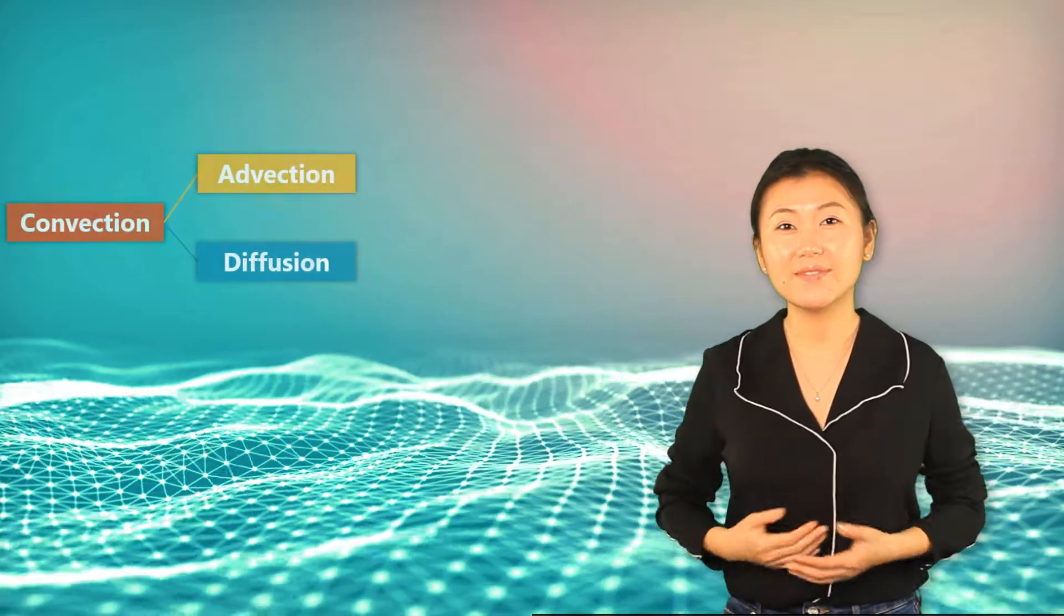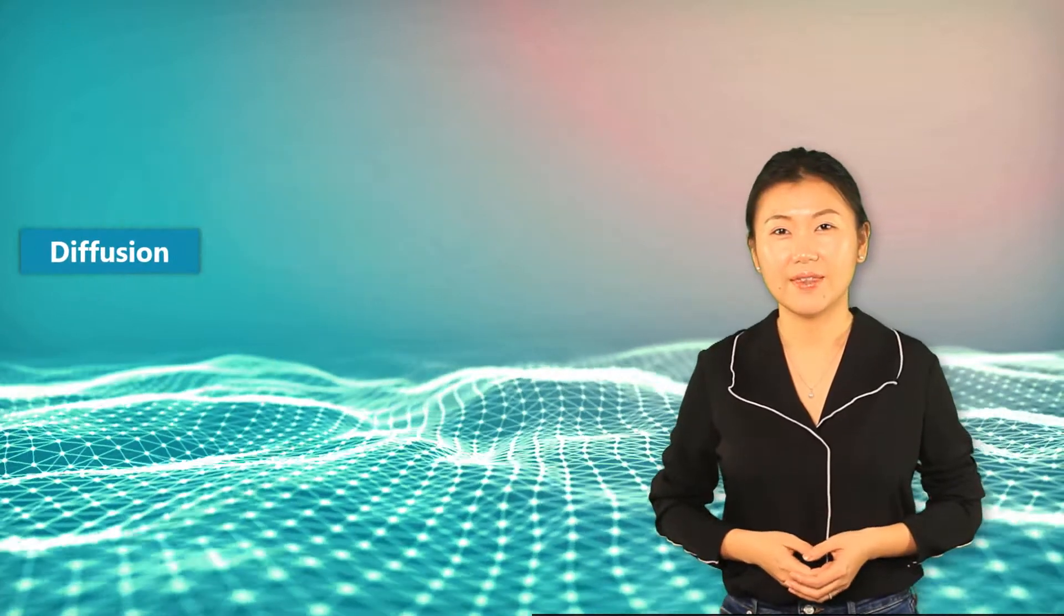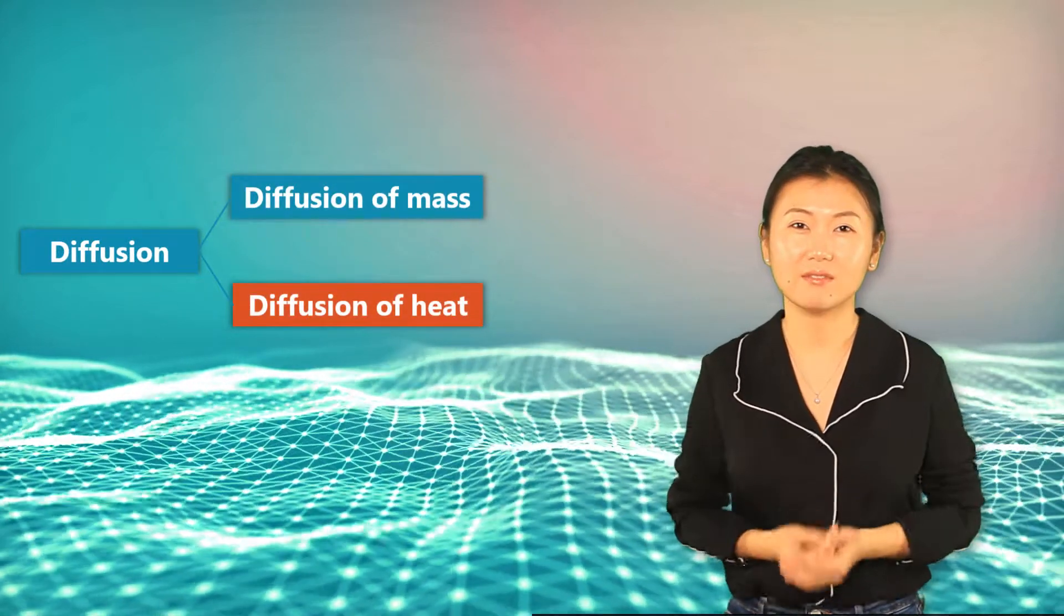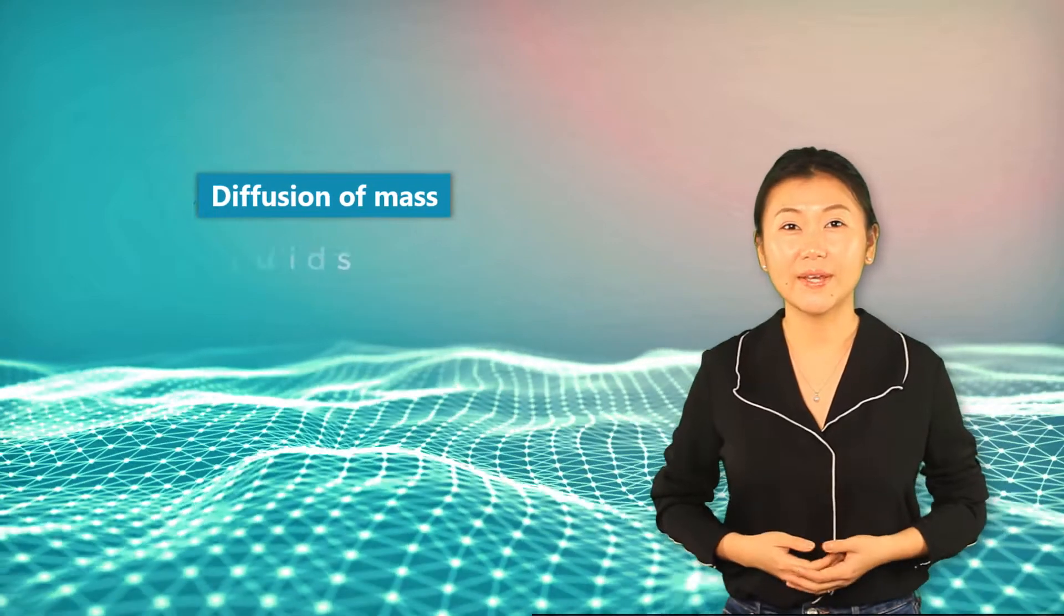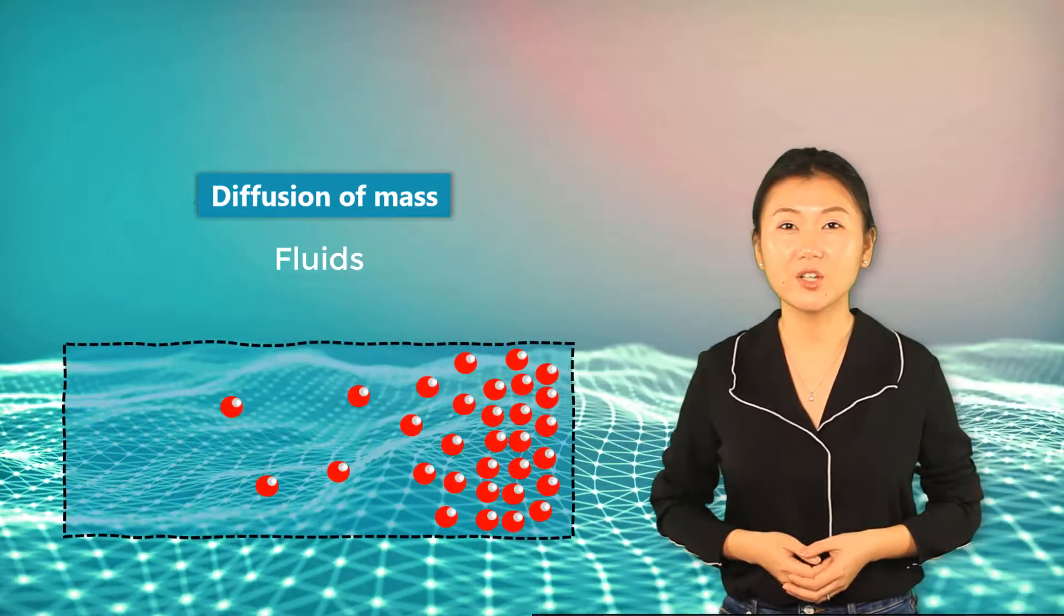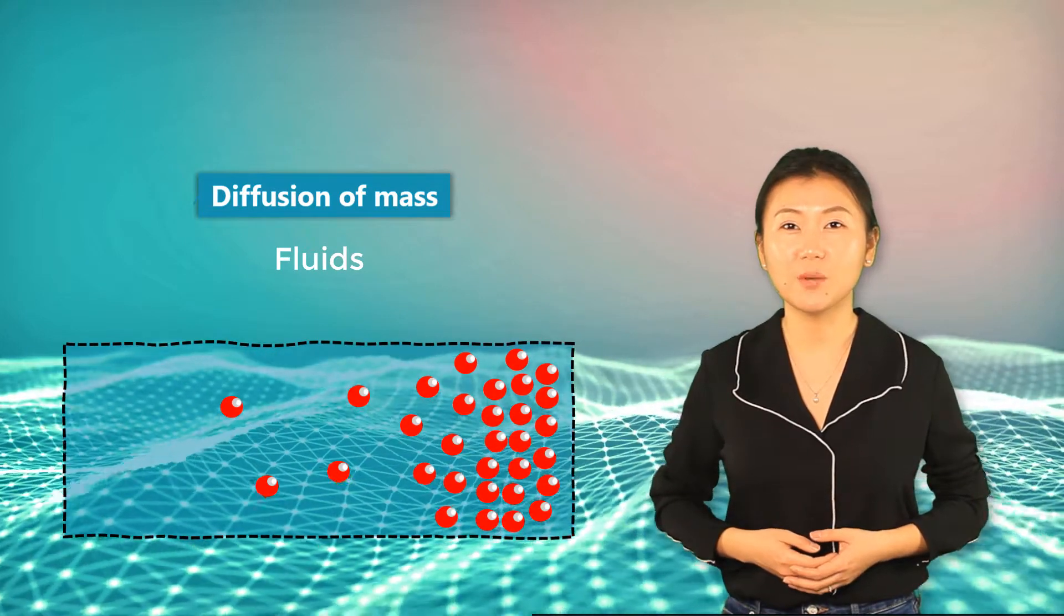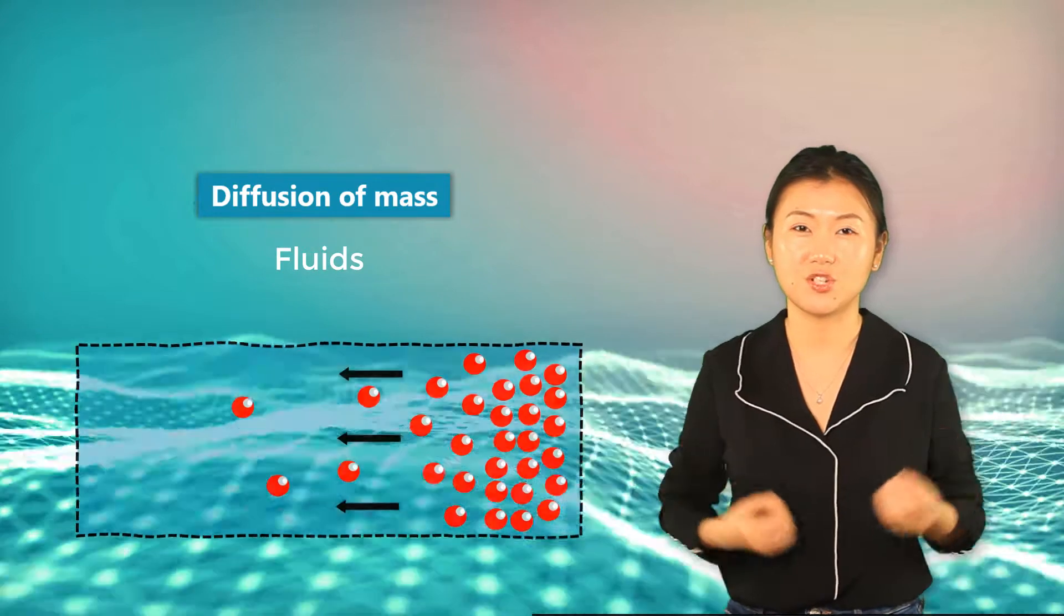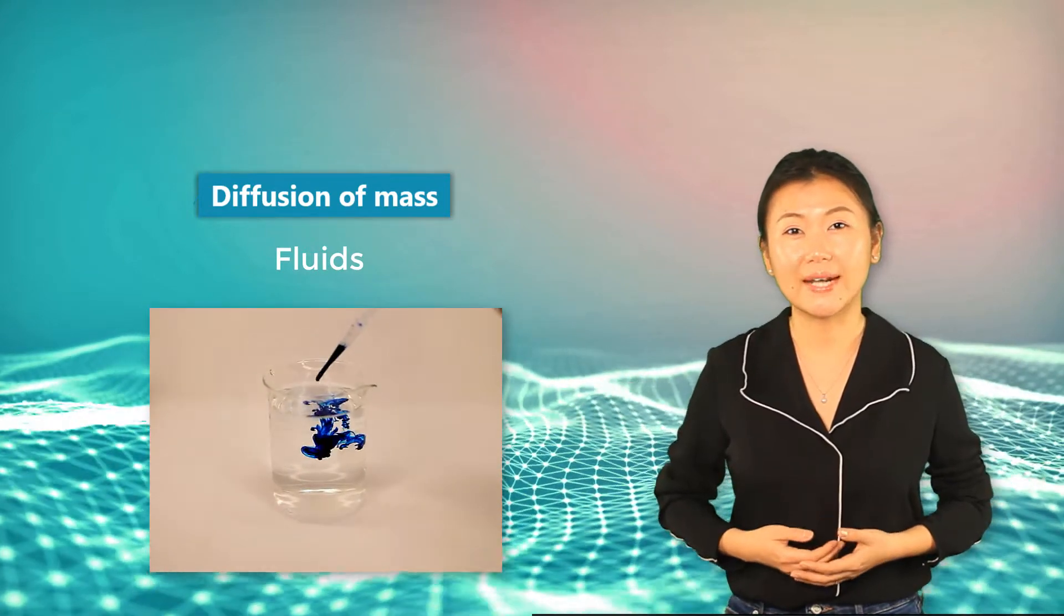Next, let's have a look at diffusion. There are two aspects of diffusion: diffusion of mass and diffusion of heat. Diffusion of mass only occurs in fluids. It describes the phenomenon that the particles in fluids tend to move from a region of higher concentration to a region of lower concentration.